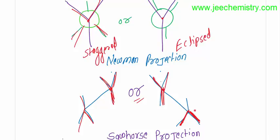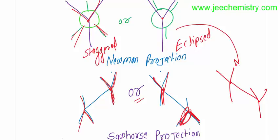But actually, this is not in the proper format. This will be drawn in this correct format. The front carbon has two in upward, and the Sawhorse will be in this format. Two in upward, one downward, two in upward, one downward — and this extra bond will be converted to upward, one downward, two downward, and one upward.